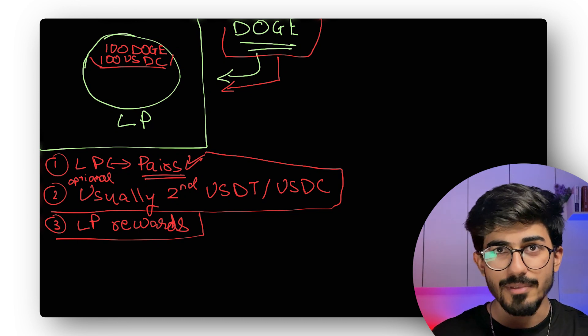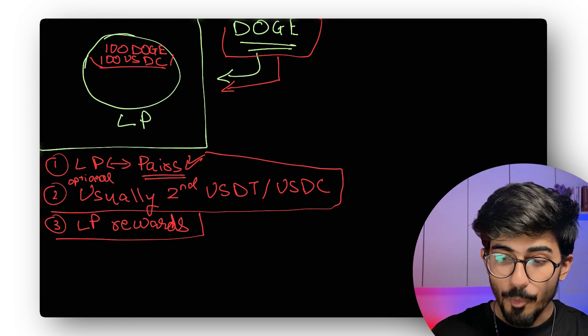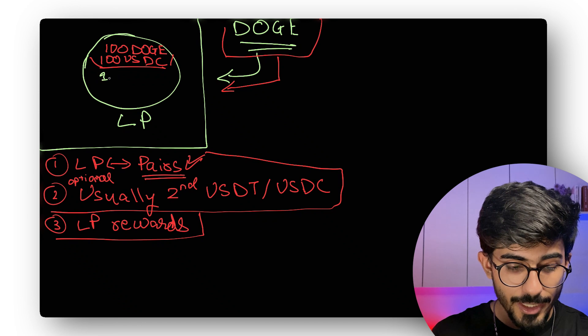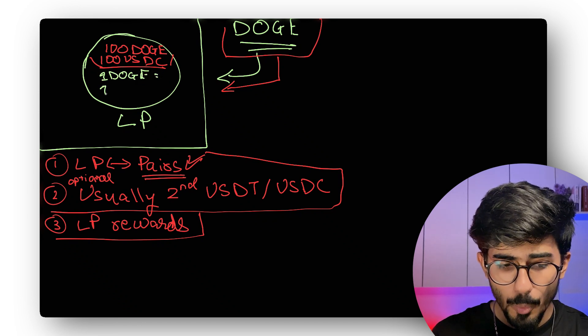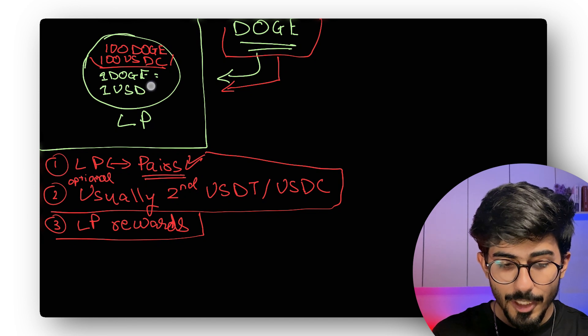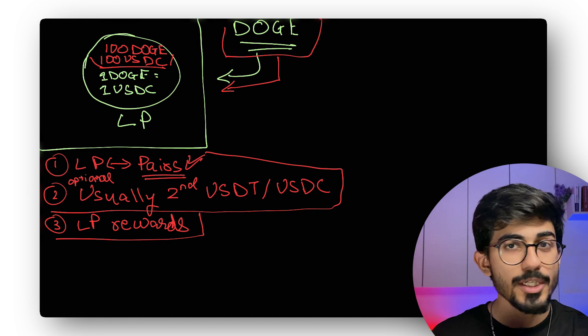So what does this mean? Does this give value to your cryptocurrency now? Yes, it does. It actually gives one Doge the price of one USDC. So if you want to purchase Doge now, you're going to have to pay one USDC to purchase one token.